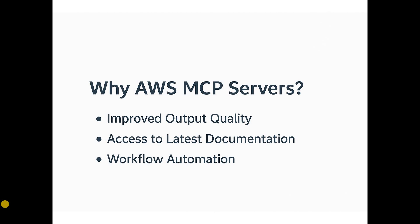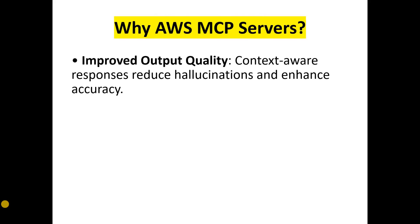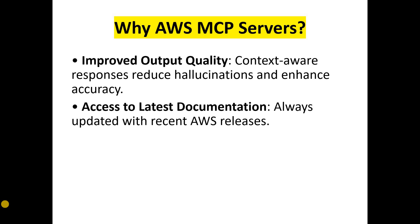Let's see why AWS MCP servers exist. We need AWS MCP servers to improve the output of an LLM. They improve the output quality of AI applications with context-aware responses, reducing hallucinations and enhancing accuracy. When you give more context to an AI application, it uses that contextual data to give answers that are more accurate, which reduces hallucinations — a known problem with LLMs.